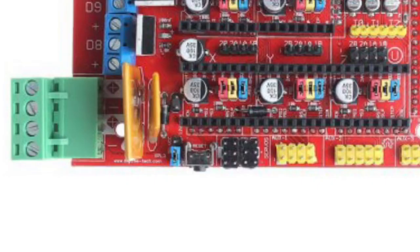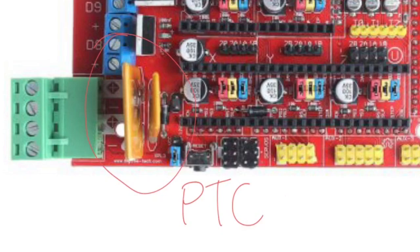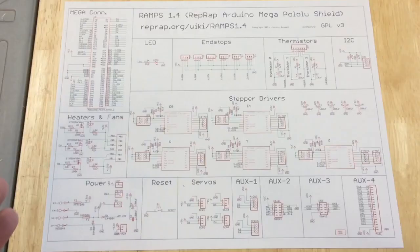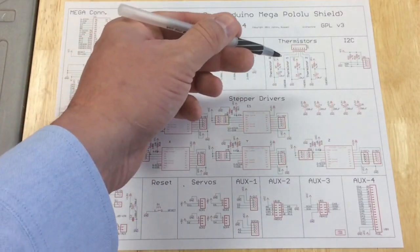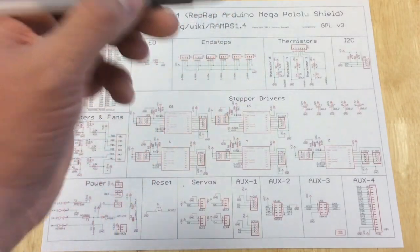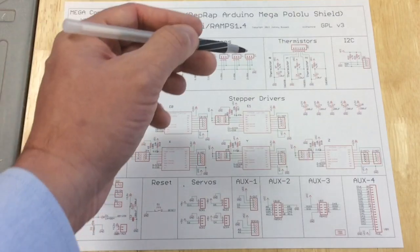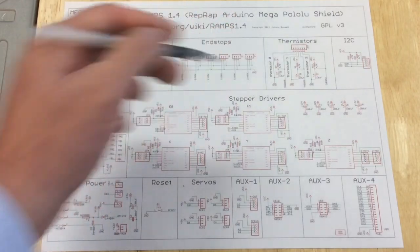Now what are polyfuses? They're basically resistors that change resistance with temperature. And these are PTC, positive temperature coefficient. The resistance goes up as they get hot, which is kind of opposite of what a thermistor does. A thermistor is a negative temperature coefficient, or an NTC. Its resistance goes down as it heats up.